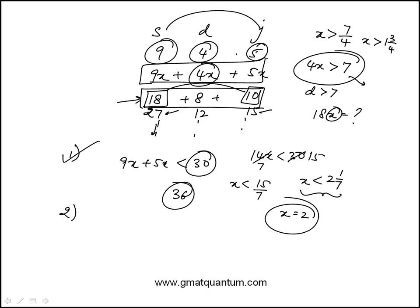Statement 2 says the total number of shirts and dresses in the closet is 26. So 9x plus 4x equals 26, giving us 13x equals 26, so x equals 2. We have a unique value, so statement 2 alone is sufficient.